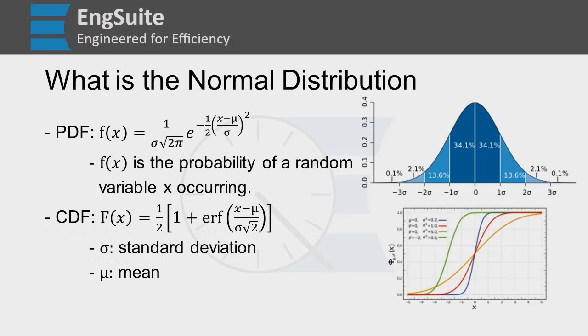What does that even mean? The PDF, f(x), is the probability of a value x occurring given the standard deviation and mean.